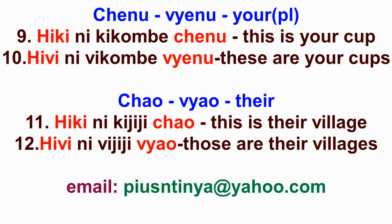Third person plural: chao and viao — means 'their.' Sentence eleven: hiki nikijiji chao — this is their village. Sentence twelve, in the plural: hivi nivijiji viao — these are their villages.